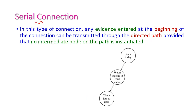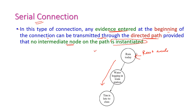The second one is serial connection. In the serial connection, the evidence entered at the beginning of the connection — here the root node is 'rain today' — can be transmitted through the directed path, provided no intermediate node on the path is instantiated. The instantiation will be only at the leaf node, that is 'Tim is late to the class.' The serial connection of this network is generated by using a chain rule.